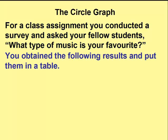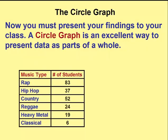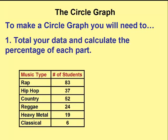You take the numbers that you got and put them in a table. We have a music type and how many students found that type of music to be their favorite. Now we want to present our results to our class. A circle graph is an excellent way to compare data as parts of a whole.